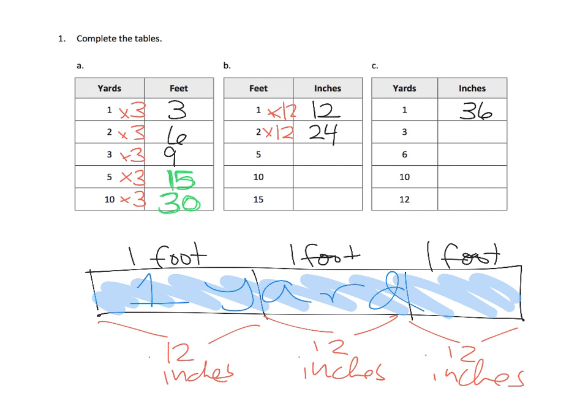Well, that means our conversion factor, our multiplication, is going to be times thirty-six. So three, here's a heads up, three times thirty-six. So that's going to be one hundred eight.